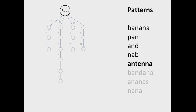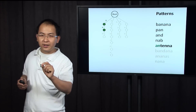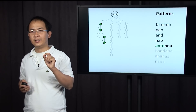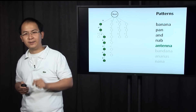Next is antenna. We start from the root, and note that there is already a branch labeled A, so we don't create a new one — we just follow it down. Then we go to N. The next character is T; we don't have T, so we create a new one. Then E, N, and A.